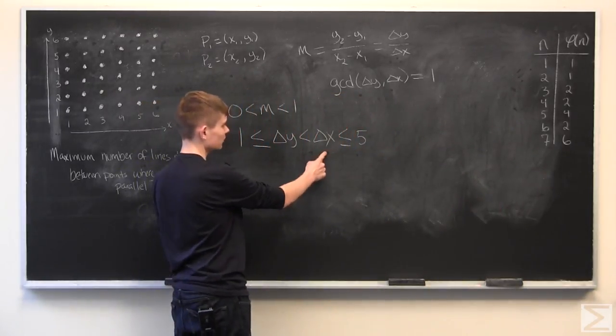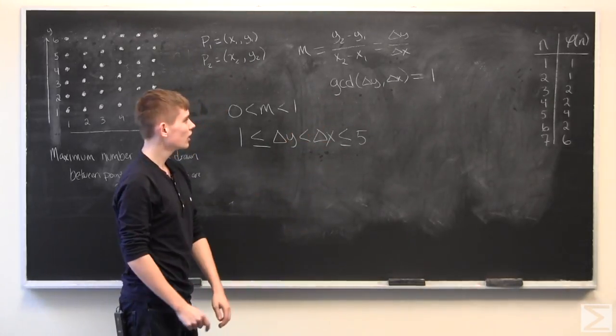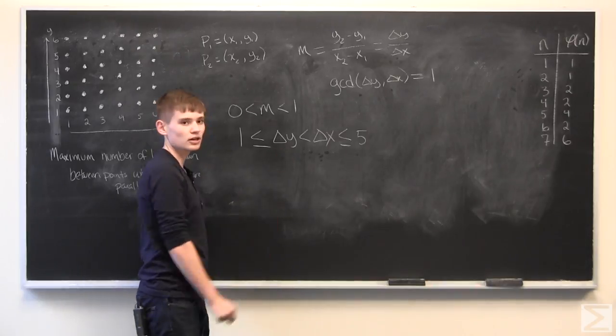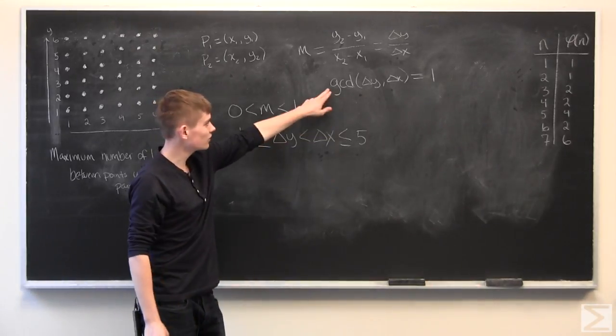Since we'll just plug in values for delta x into the Totient function, and we'll get the number of delta y's that satisfy this equation.